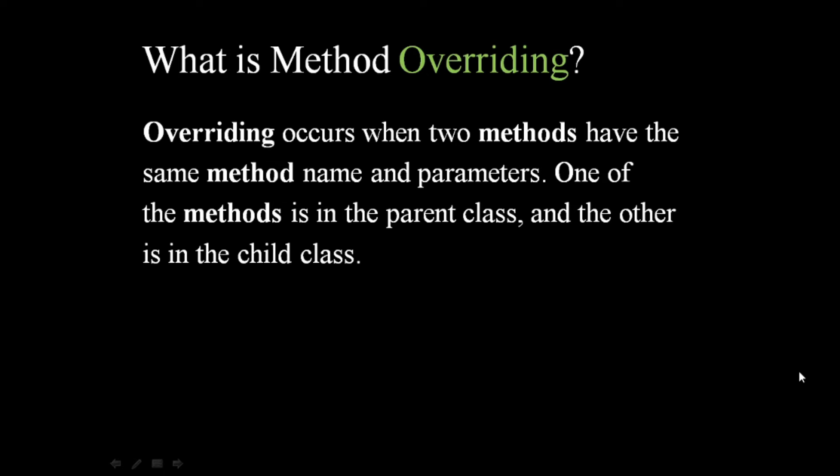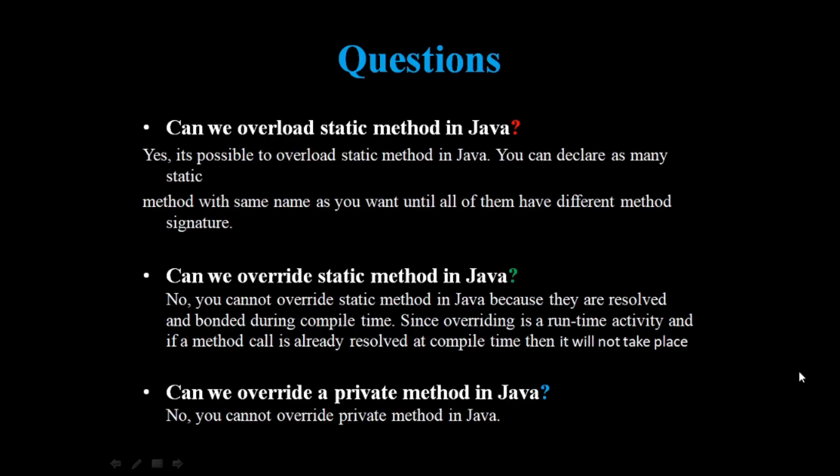Now, what is method overriding? Overriding occurs when two methods have the same method name and parameters — one method is in the parent class and the other is in the child class. The benefit of overriding is the ability to define behavior that is specific to the subclass type, which means a subclass can implement a parent class method based on its requirement. This is how we make it possible using the concept of method overriding.